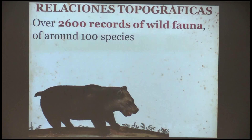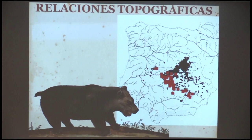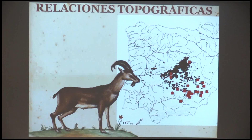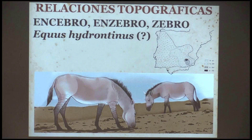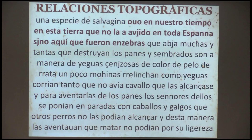Interestingly, there is not a single mention of American crops in the area at that time. The data shows, for example, the distribution of brown bear records and the wild goat, which was quite widespread. It also has the last mentions of Dencebro — the wild aurochs, the last megafauna to go extinct in Europe. It is an impressive testimony, very lively, from people who had known the aurochs during their lifetimes but said they had disappeared from the village. The two villages that mention Dencebro both give the same answer. The description is amazing: 'yegua cenizosa de color de pelo de rata un poco mollinas' — it's wonderful how they described the animal.